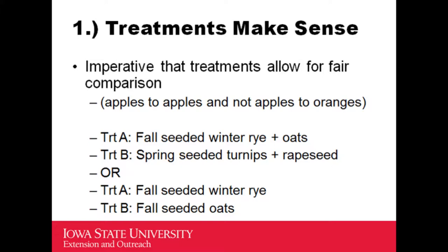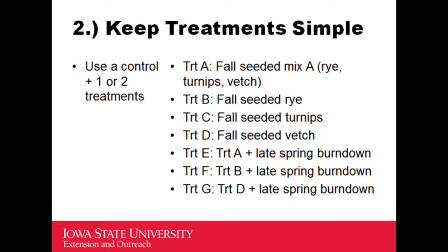The first thing: we need to make sure that treatments make sense. We always talk about comparing apples to apples, not apples to oranges. We need treatments to be comparable so we can actually learn something. For example, treatment A being fall-seeded winter rye plus oats versus treatment B being spring-seeded turnips and rapeseed — we're not really going to learn anything comparable from those two. Whereas a fall-seeded winter rye versus fall-seeded winter oats — now we're comparing something winter-hardy versus something that will winter-kill.